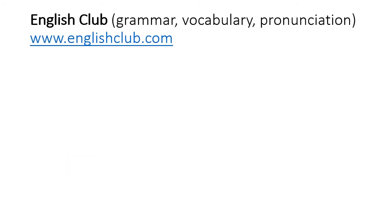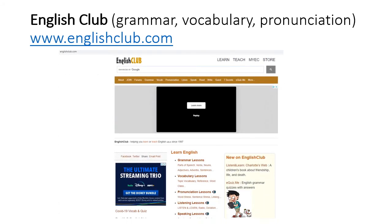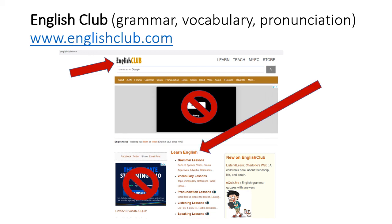Maybe you want to practice everything — listening, speaking, reading, grammar, vocabulary, and pronunciation. The English Club website has all of these activities. The address is www.englishclub.com. The homepage looks like this — it says English Club at the top. Watch out for lots of ads on this page too. Don't click on them. See where it says Learn English? Click on what you want: grammar, vocabulary, pronunciation, listening, speaking. Scroll down to see even more.